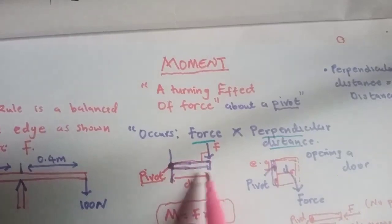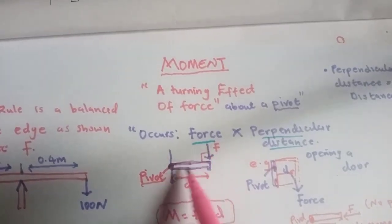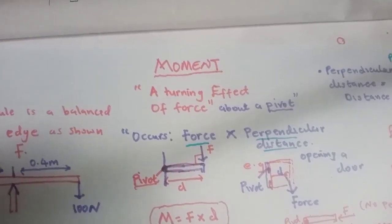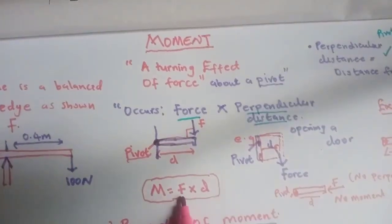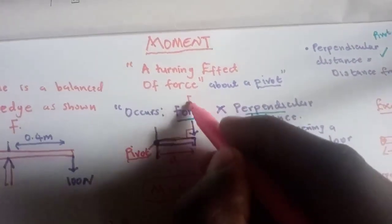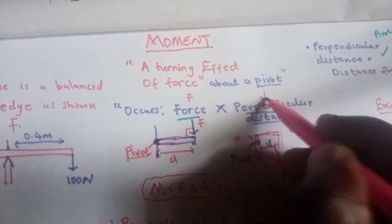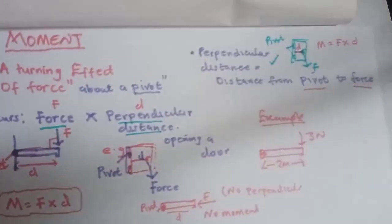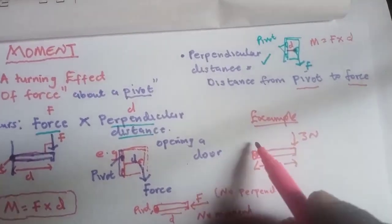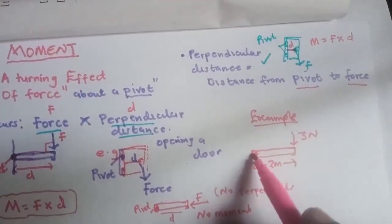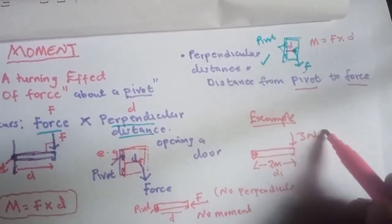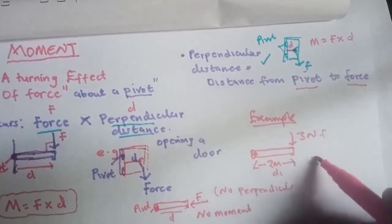But in a case where the force and the distance make a right angle, there is a moment. The formula for moment is force times the perpendicular distance. Let's look at an example — you have an object arranged with a perpendicular distance and a force, so you can easily calculate the moment.